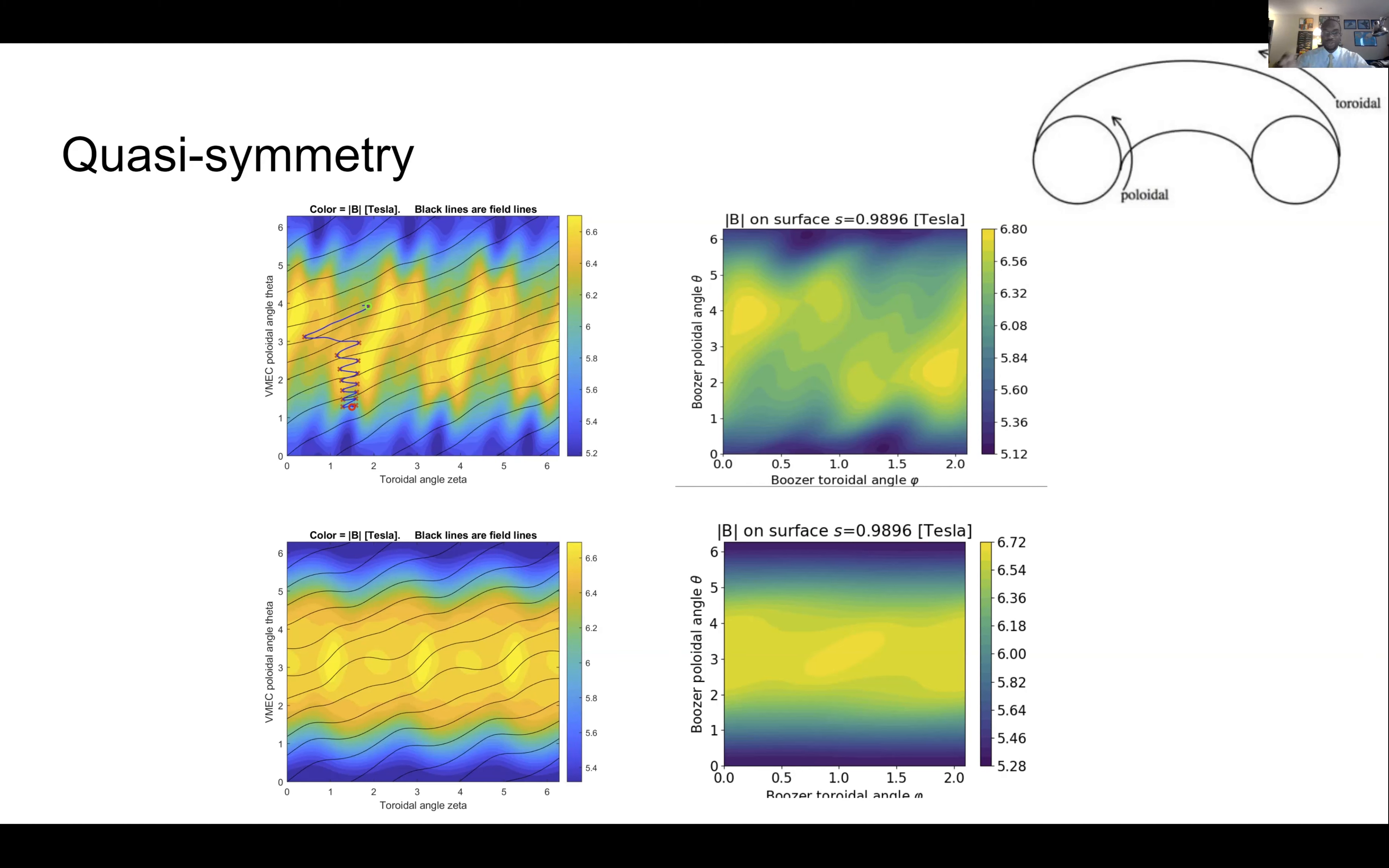But what's important about these plots on the right is that it allows us to study a quantity called quasi-symmetry. Quasi-symmetry tells us how uniform the field is in a certain direction. Now, all the fields in this study were quasi-axi-symmetric, so we're going to be looking for symmetry and uniformity in the toroidal direction.